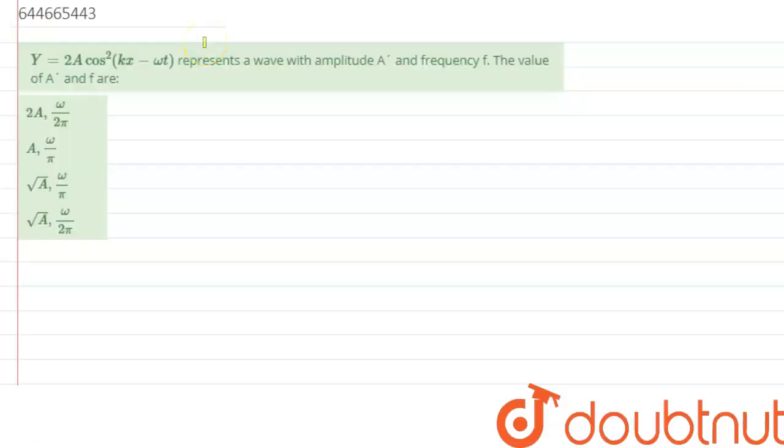Hello everyone, so we are given with a question which says y equals to 2a cos square kx minus omega t represents a wave with amplitude capital A and frequency f. So the value of a and f are, so we need to calculate the amplitude value and the frequency value.